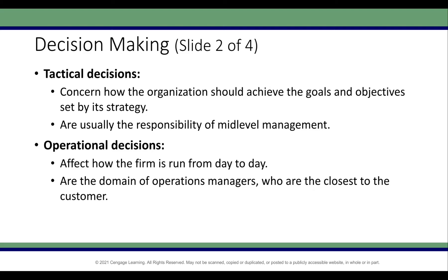Tactical decisions are the concern of mid-level management. At this level, they try to achieve the goals set forth by the strategic decision makers. Strategic decisions are generally made by the CEOs and C-level executives. For example, if a 10% growth is wanted at the strategic level, the tactical level determines how to achieve that — do you open new stores, do you increase your advertisement budget, and things like that.